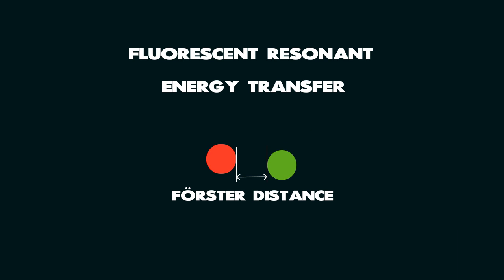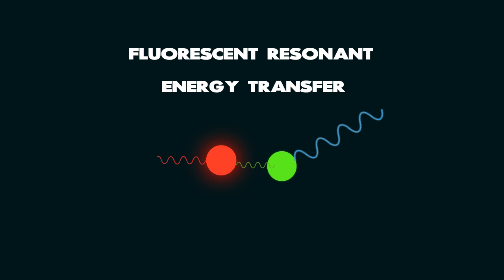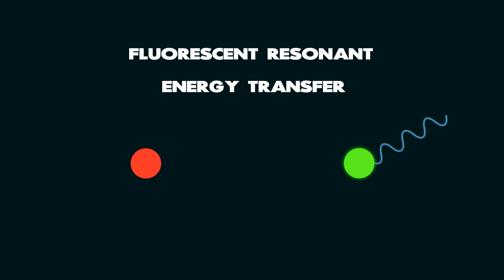When the two dyes are at a distance less than the Förster distance, the fluorescence energy from the excited donor dye is completely transferred to the acceptor dye, leading to a red fluorescent signal. However, when the two dyes are far apart, the energy transfer is not as efficient and a yellowish fluorescence is seen due to the presence of both the colors.